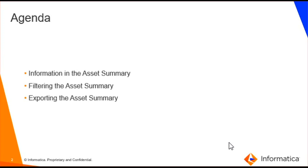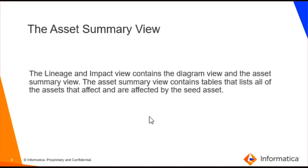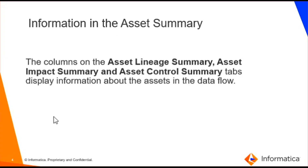In the lineage impact view, you can see the diagram view and the asset summary view. The asset summary view contains tables that list all the assets that affect and are affected by the seed asset. Also, the assets in the asset summary view are independent of the assets shown in the lineage and impact diagram. The asset summary view contains three tabs.